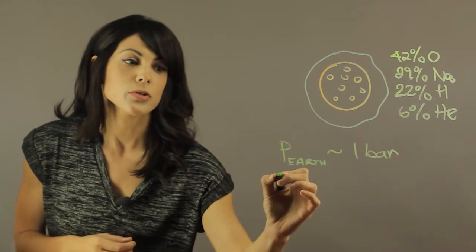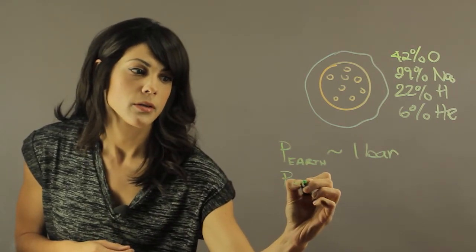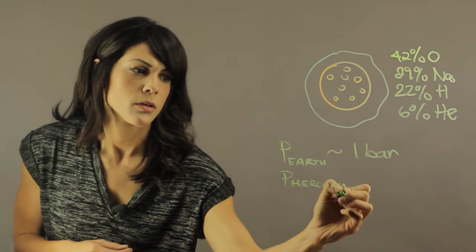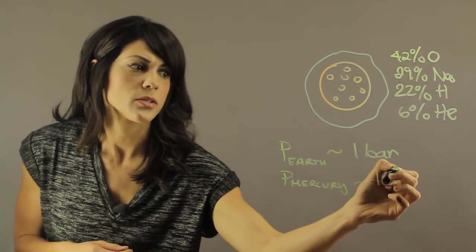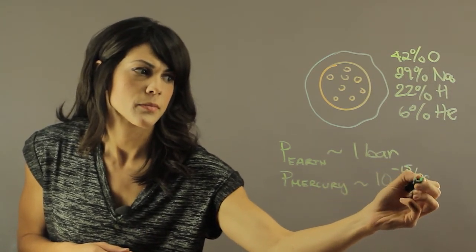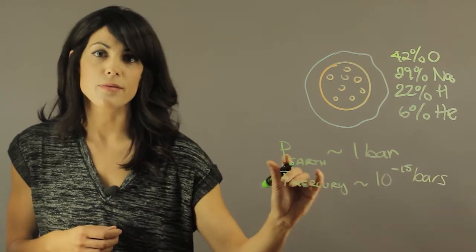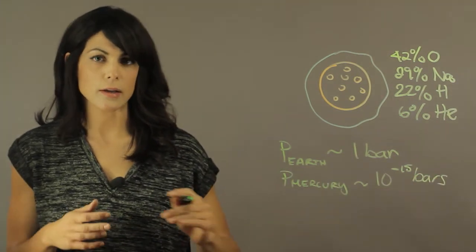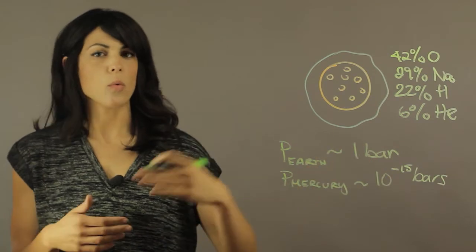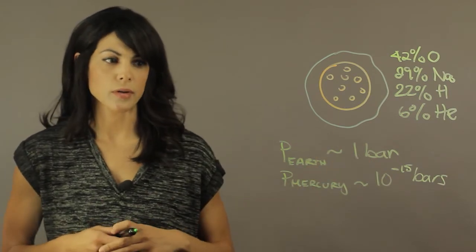Now the pressure on Mercury is 10 to the minus 15 bars. So that's very, very, very small. I mean, that's over 1 billionth of the pressure on Earth.